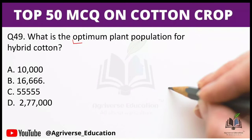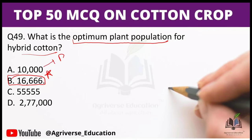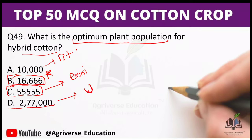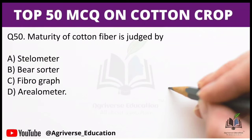Next question: What is the optimum plant population for hybrid cotton? For hybrid cotton it is 16,666 plants per hectare; for Bt cotton it is 10,000 plants per hectare; for desi cotton it is 55,555 plants per hectare; and for ultra narrow row planting the plant population is 2,77,000 plants per hectare.